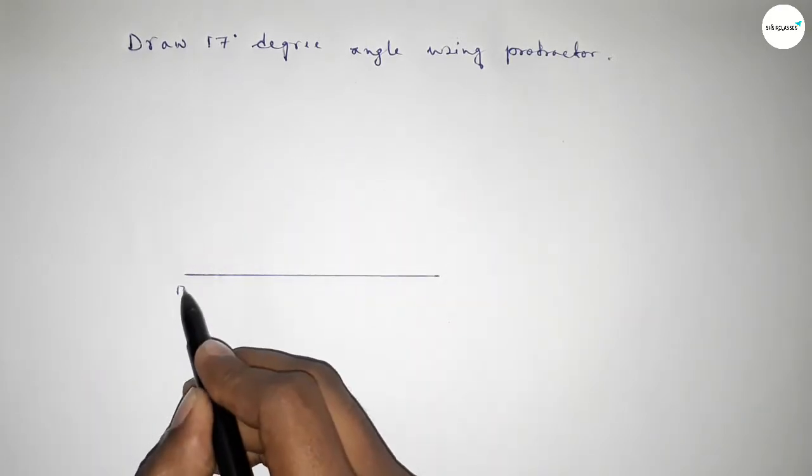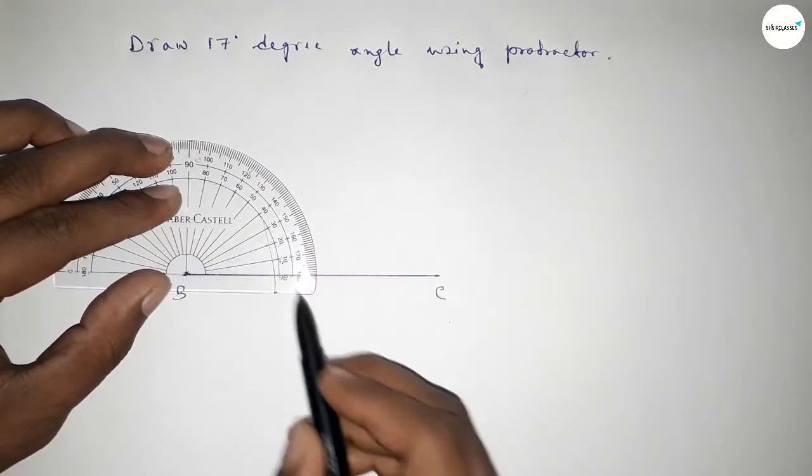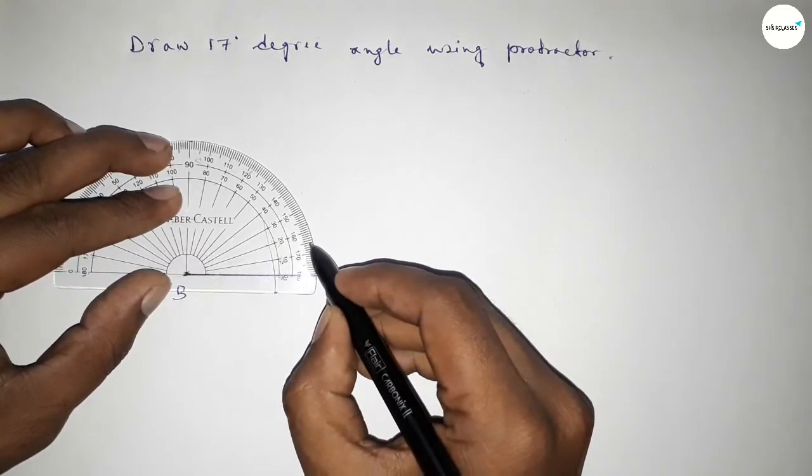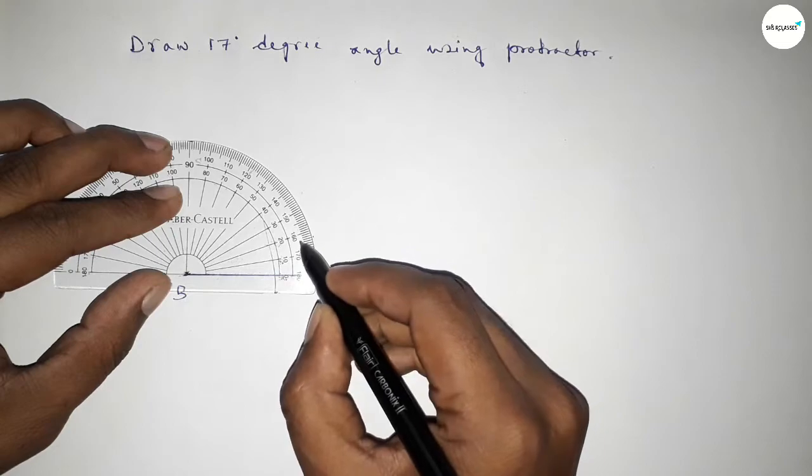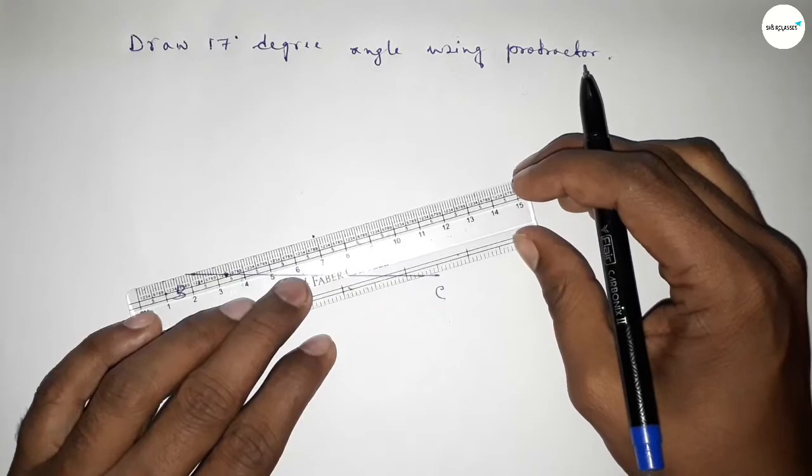Taking here point B and here C. Now putting the protractor on point B and counting the angle. So this is 0, 10, 15, 16, 17. So this is 17 degrees. Now joining this to get a 17 degree angle.